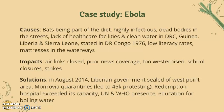In Monrovia, there were quarantines, which led to 45,000 people protesting. Redemption Hospital exceeded its capacity, being heavily relied upon during the Ebola outbreak. The UN and WHO had their presence in these countries, and there were education sessions on how to boil water, maintain sanitation, and things like that. Monrovia is the capital of Liberia.